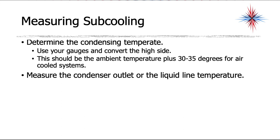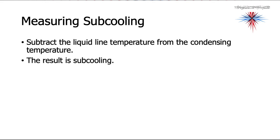To measure subcooling, use your gauges to determine the high side pressure and convert it to temperature. Make sure it is within range for the ambient temperature — for air-cooled systems it should be ambient plus 30 to 35 degrees. Then measure the condenser outlet or liquid line temperature and subtract it from the condensing temperature. The result is your subcooling value.